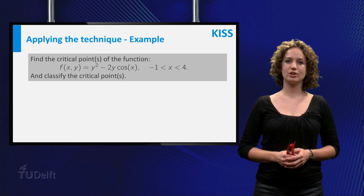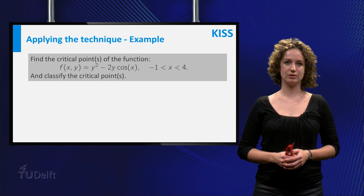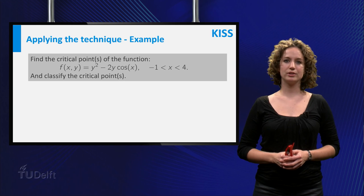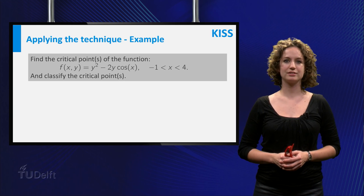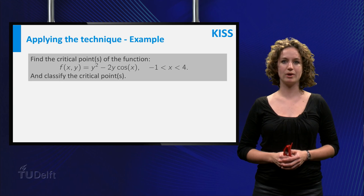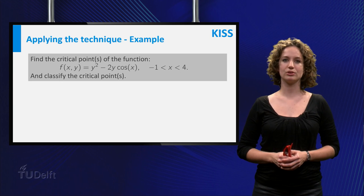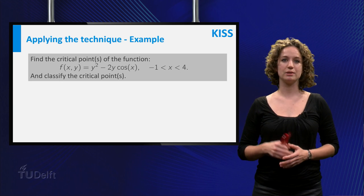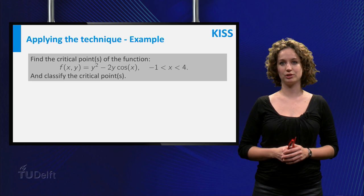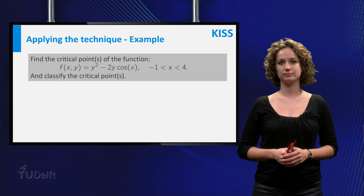The problem you will solve today is as follows: find the critical points of the function f of x and y equals y squared minus 2 times y times the cosine of x, with x between minus 1 and 4, and classify the critical points.